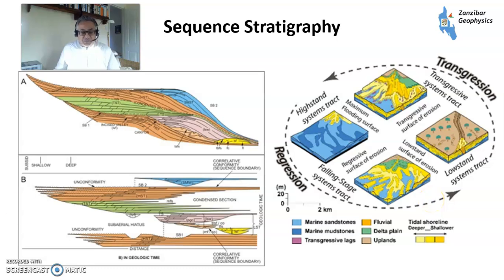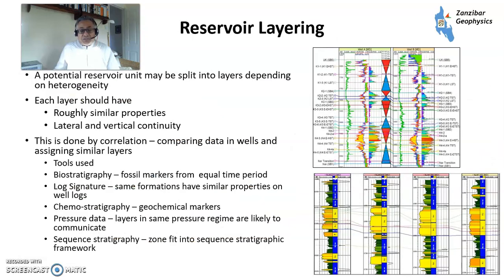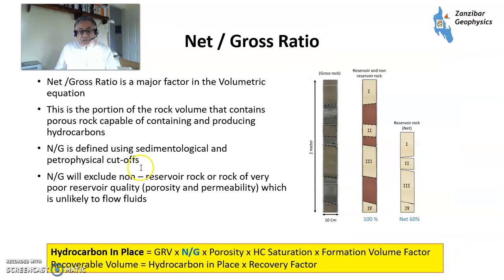It really deserves another video, but that's a basic introduction. Once you've got your reservoir, you need to try to understand it. Reservoir layering looks at how different parts of the reservoir link up — these are log correlations within a sequence stratigraphic framework. You're looking for layers with roughly similar properties, lateral and vertical continuity, to build your reservoir model and understand reservoir architecture. Net-to-gross ratio — there's a video on this on my channel — is basically the proportion of rock within your hydrocarbon discovery which is actually true reservoir. The non-net are things like shales and very tight rocks that don't contribute to overall volume.